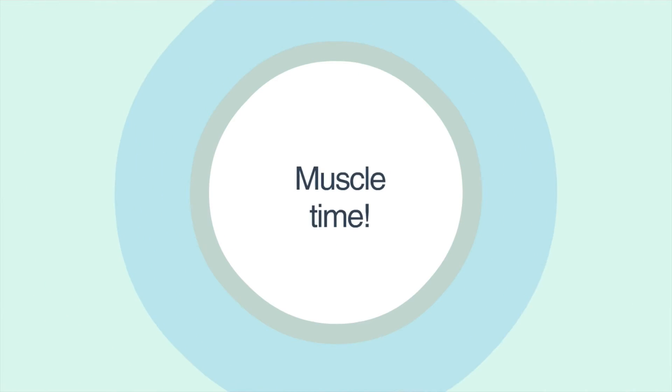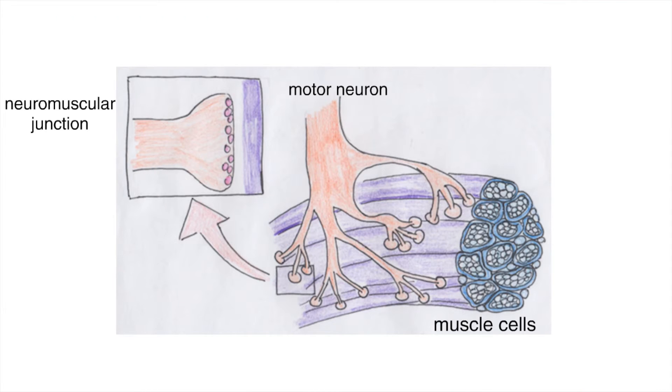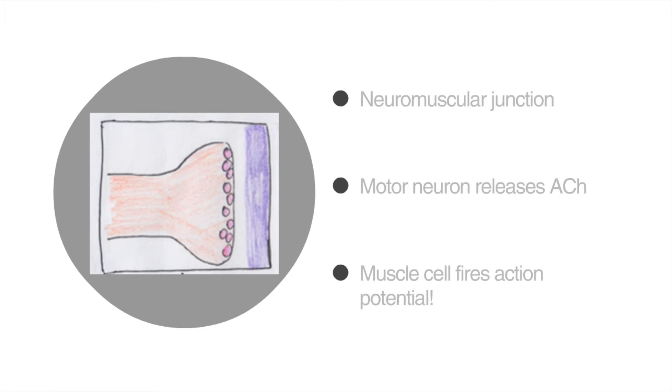So now that we understand how signals can be passed through neurons, let's talk about motor neurons and muscles. Motor neurons extend from the central nervous system and connect to our muscle cells, which are also called muscle fibers. A motor neuron connects with the muscle cell at the neuromuscular junction. Here the motor neuron releases the neurotransmitter acetylcholine in order to transfer the action potential from the neuron to our muscle cell.